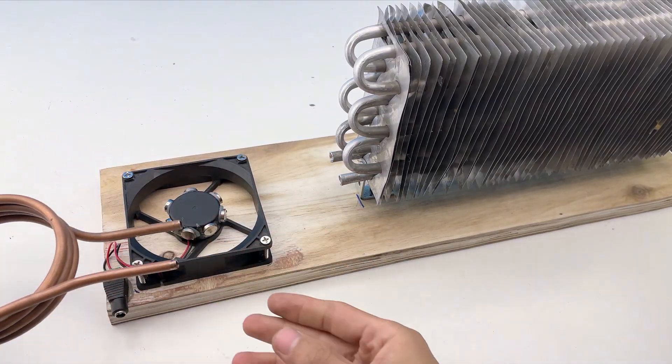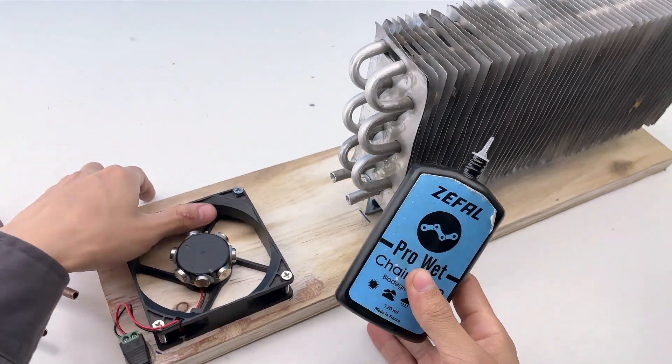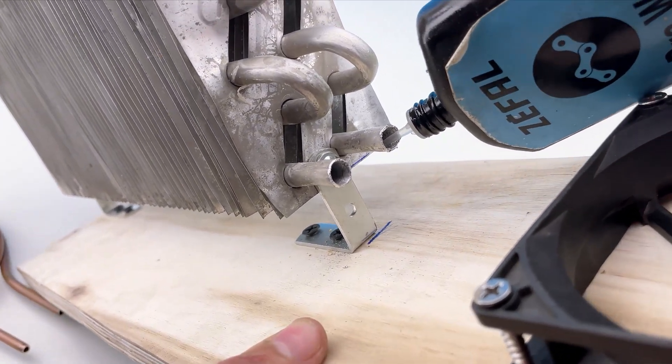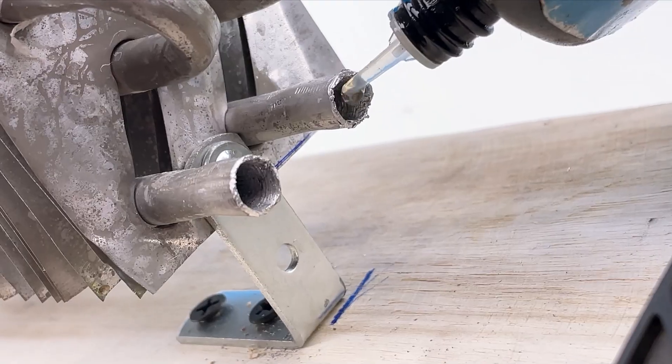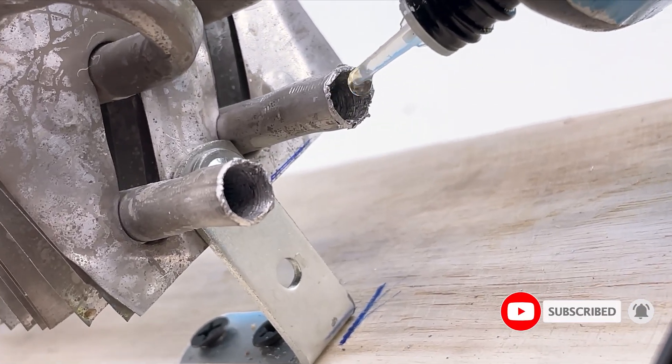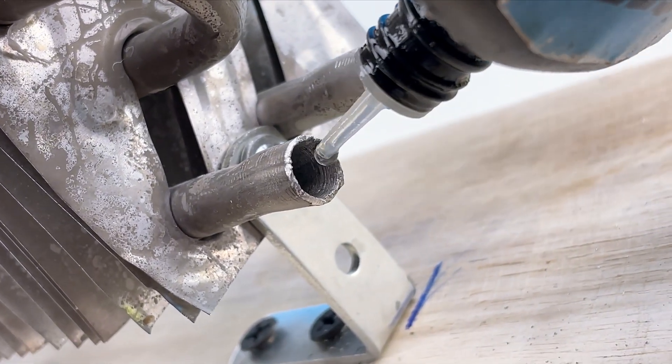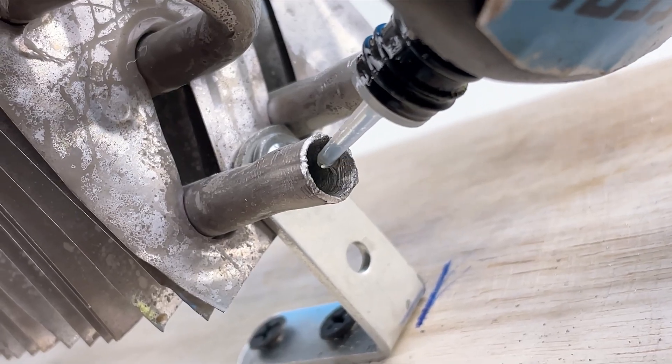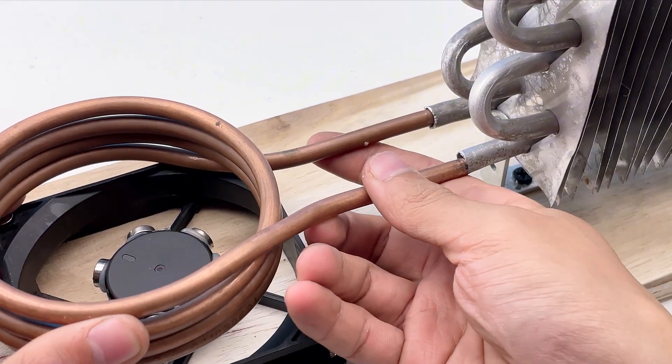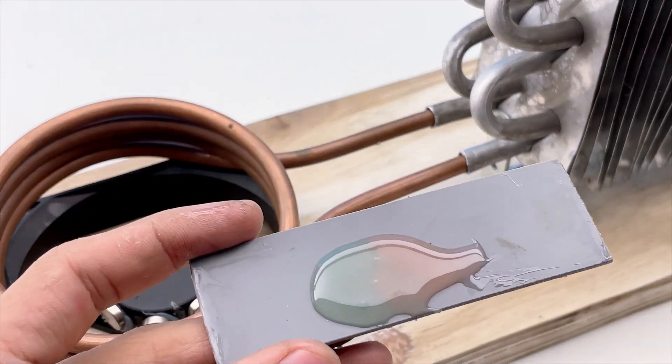But before that, I need to add some oil to the evaporator. Bicycle chain lubricant is a convenient choice. Once the copper tube is inserted, I secure it to the evaporator using two-part Epoxy glue.